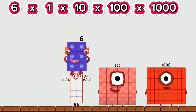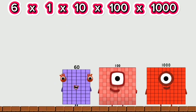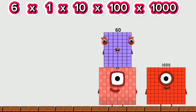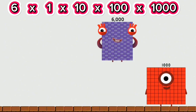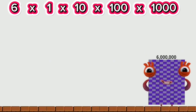6 times 10 equals 60. 60 times 100 equals 6,000. 6,000 times 1,000 equals 6,000,000.